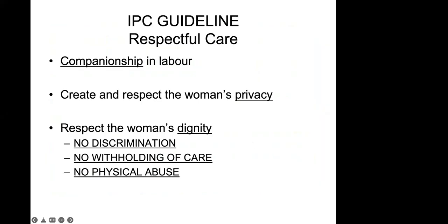With that partogram comes a guideline on how to use it, and also how we should monitor labor if we allow more time. The first thing in the guideline is actually respectful care — even though it should be one of the most important things we focus on in labor, it is very often overlooked. Under respectful, woman-centered quality care: number one is companionship in labor. It's one of the only interventions proven to actually benefit outcomes. No woman should be laboring by herself.